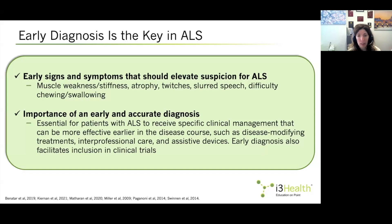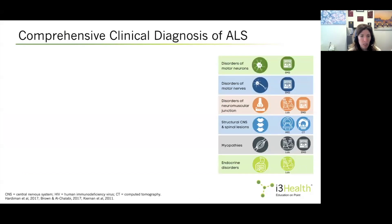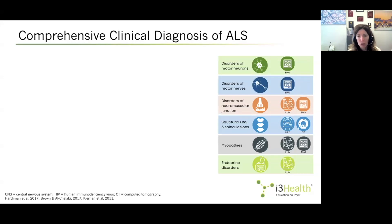Early diagnosis also facilitates inclusion in clinical trials. At this time, the diagnosis of ALS is essentially still a clinical diagnosis, meaning it is based on history and recognition of symptoms, coupled with a physical exam that allows the physician to recognize the characteristic upper and lower motor neuron dysfunction signs of ALS. Laboratory tests are important but are mostly used to rule out other causes of weakness — we want to rule out disease mimics.